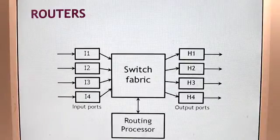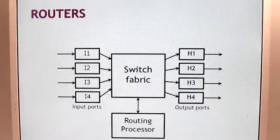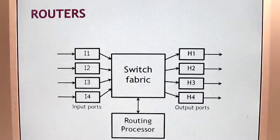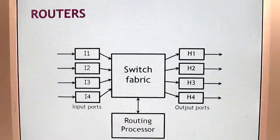This forwarding table is comprised of destination address prefixes together with next hops. The packet is routed to the next hop corresponding to the longest matching prefix in the forwarding table.